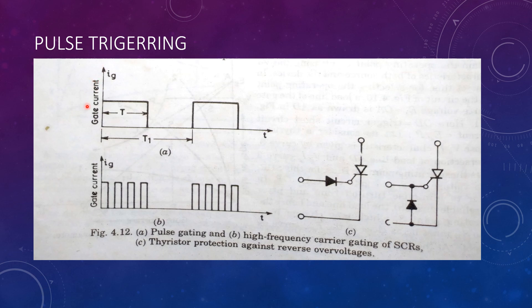In practice, a gate current of large magnitude is applied to a thyristor so that the thyristor turns on in a short interval of time.